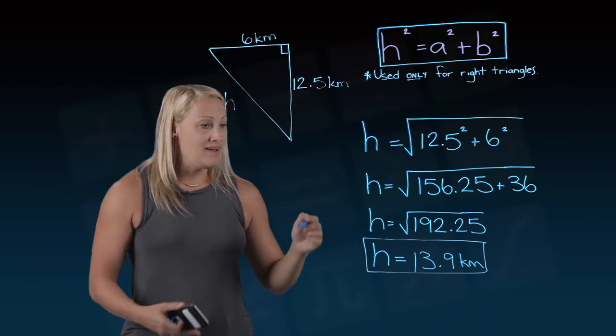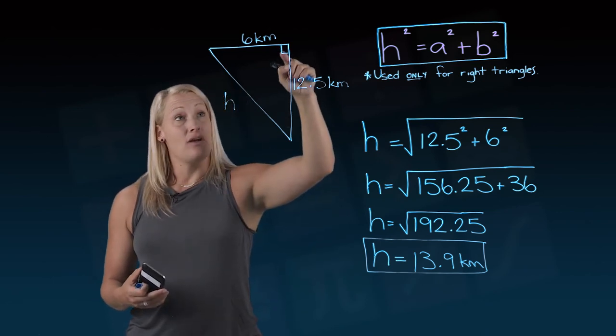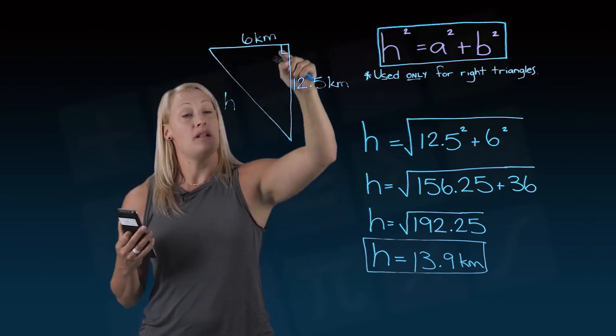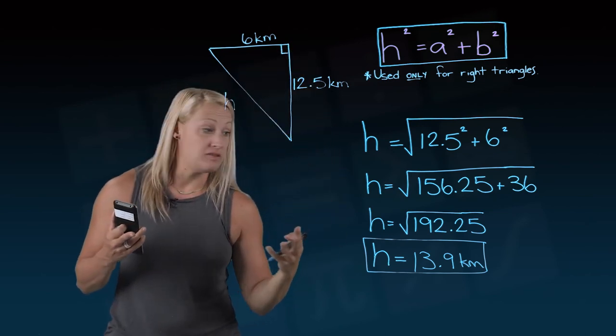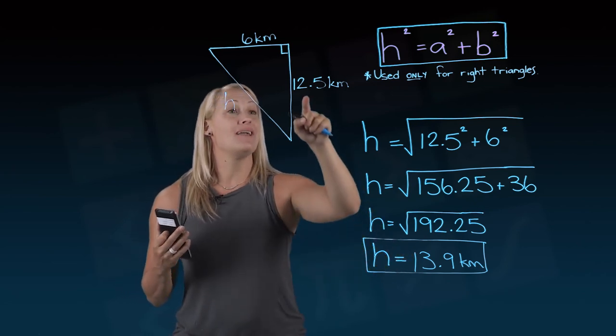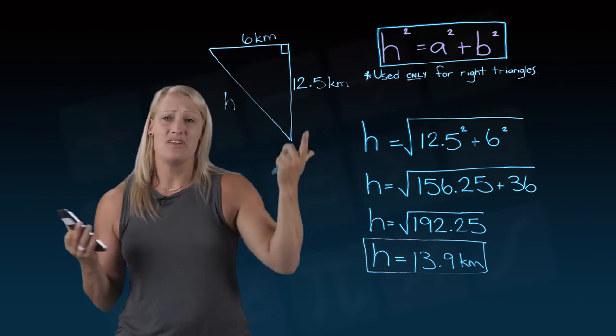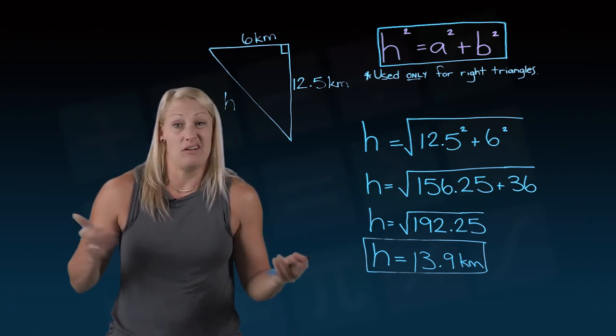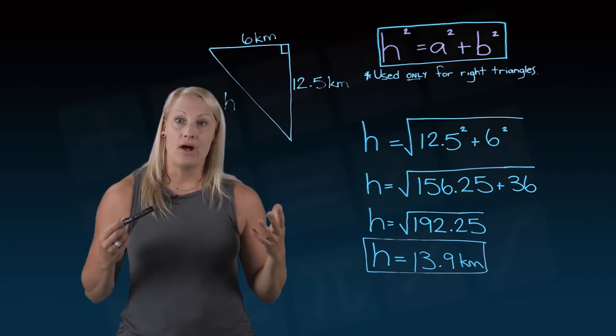So there's the distance of my hypotenuse. And also one last thing to keep in mind. Since this 90 degree angle is the biggest of these three angles in the triangle, the side directly across from it is also the biggest side. So 13.9, well that's bigger than 12.5 and it's bigger than 6. So that's just kind of a nice way to check to make sure that you are correct or that you're on the right track.